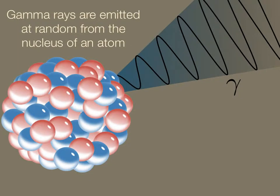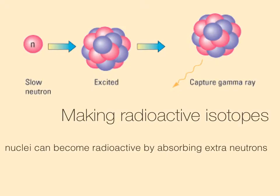Gamma rays are harder to control because they're emitted at random from the nucleus of the atom, so we can't stop or start them — they just occur. If we're using gamma radiation for a medical purpose, we need radioactive isotopes. Nuclei can become radioactive by absorbing extra neutrons, which is usually done in a nuclear reactor. Once the nucleus has become radioactive, it will emit gamma rays, which can then be used as medicine.